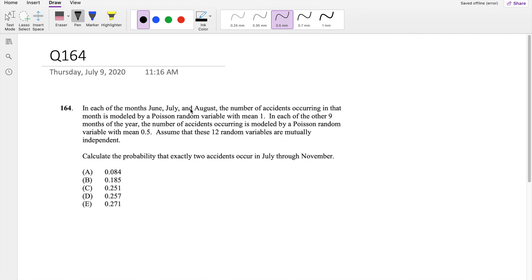So in the months of June, July, August, the number of accidents occurring is modeled by a Poisson distribution with a mean equal to 1. In the other 9 months, it is a Poisson distribution with a mean equal to 0.5.